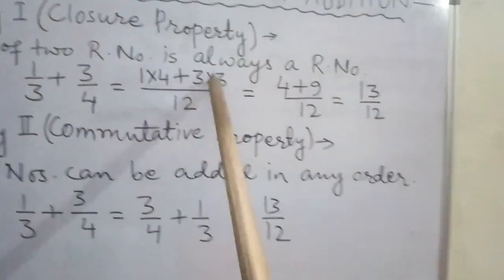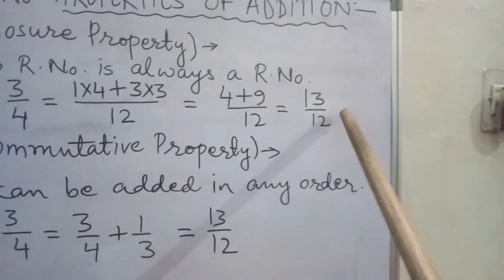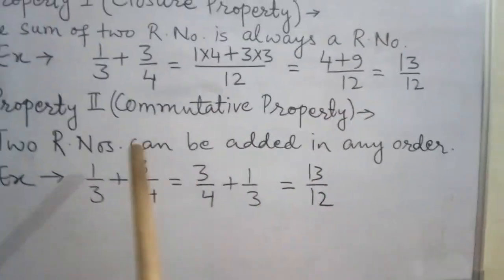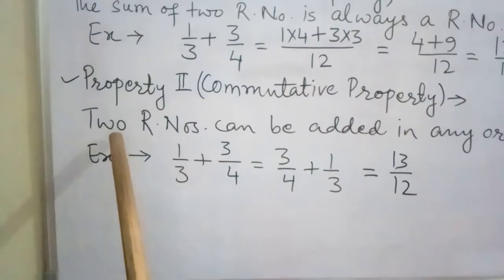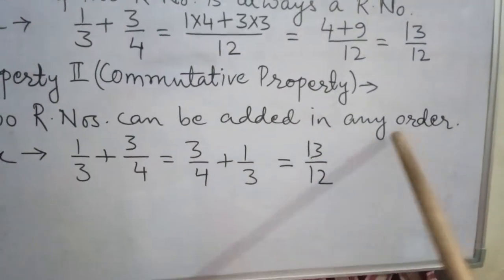Whenever we add them, the result is also a rational number. Now property 2, that is commutative property. Here two rational numbers can be added in any order.